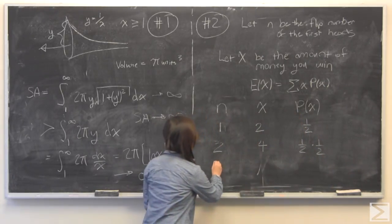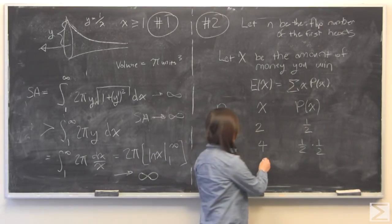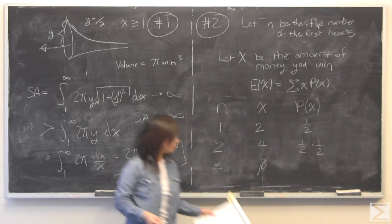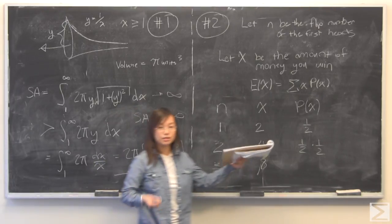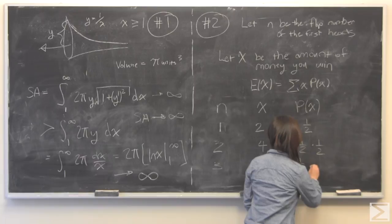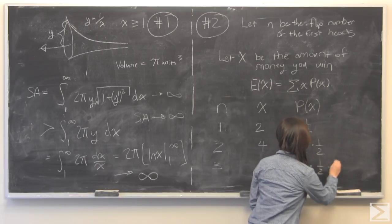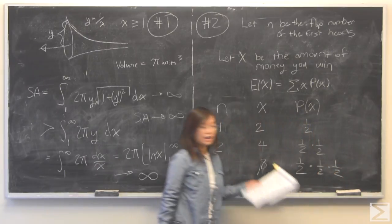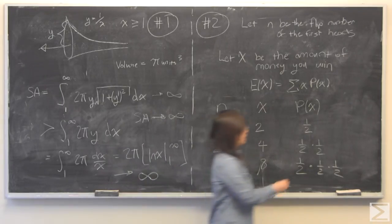So I will do one more and then you will just see the pattern. If it takes three tries you will get eight dollars because two to the power of three is eight. First one tails is one half chance. Second one tails is one half chance. Third one heads is one half chance. And hopefully you are seeing the pattern, the probability of x.